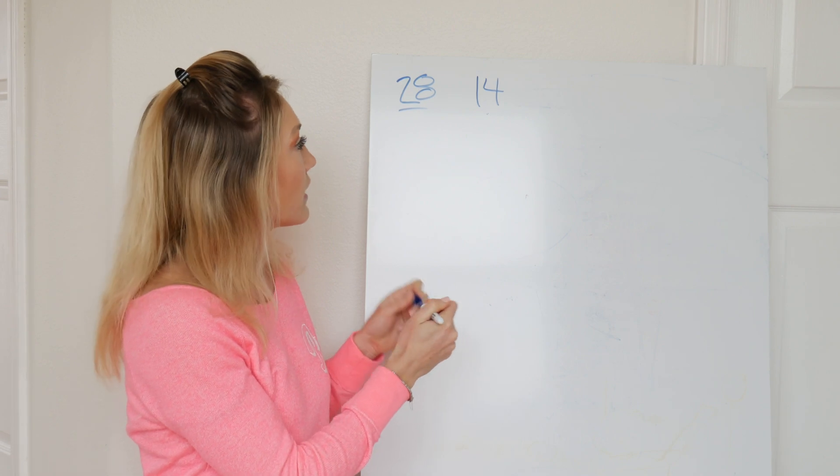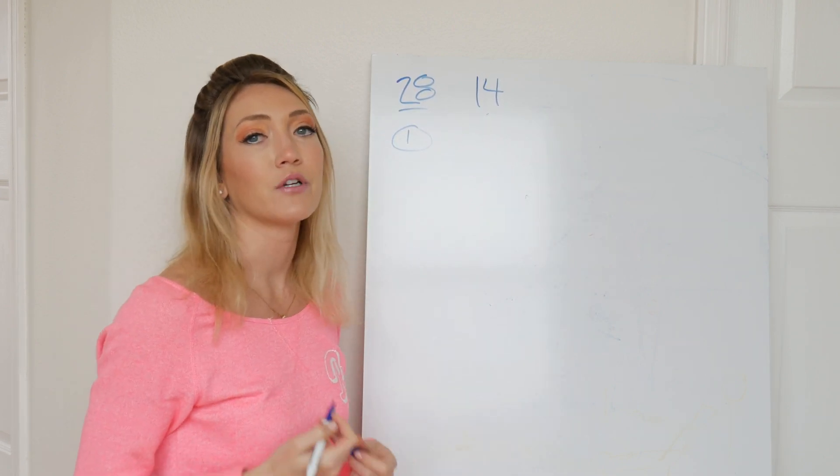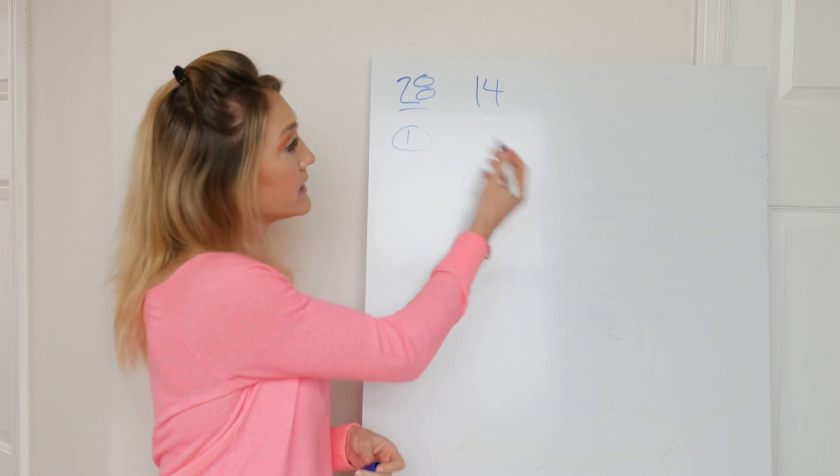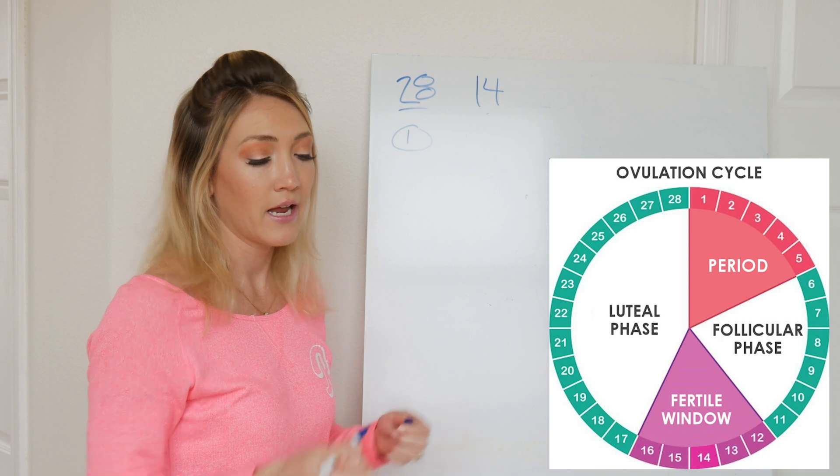And your cycle, day one of your cycle is the first day of your last period, so 14 days after that day is going to be about your ovulation day.